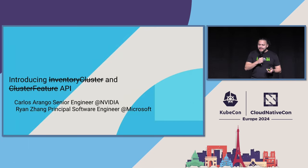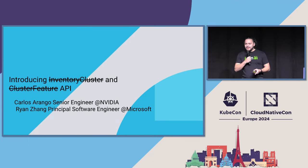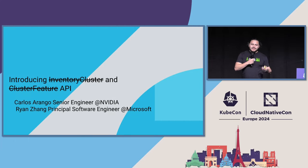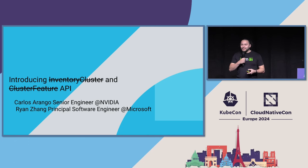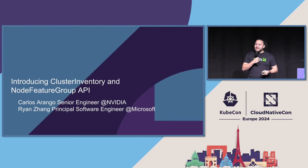Let's start by saying that defining APIs is hard — from the name itself. You all came to the talk titled 'Introducing Inventory Cluster and Cluster Fisher API.' The names have gone through many iterations, and there is actually a poll at the end of the presentation on naming. Every time we run a SIG multi-cluster meeting, we propose new names. Welcome again to the Cluster Inventory and Node Feature Group API talk — it keeps changing, so maybe by the end it'll have a different name.